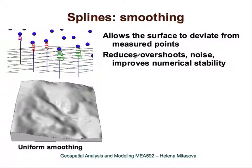That's why we introduce smoothing. Smoothing is a parameter that allows the surface to deviate from measured points. We say we are not requiring the resulting surface to pass exactly through the data points, but in its effort to be smooth, it can deviate from them. The addition of smoothing reduces overshoots, allows us to smooth out noise, and also improves numerical stability.